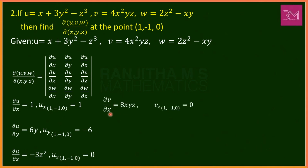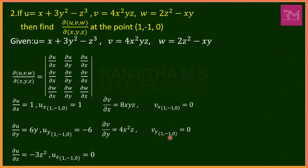For v = 4x²yz: del v/del x = 8xyz, so vx at (1,−1,0) = 8(1)(−1)(0) = 0. del v/del y = 4x²z, so vy at (1,−1,0) = 4(1)²(0) = 0. del v/del z = 4x²y, so vz at (1,−1,0) = 4(1)²(−1) = −4.